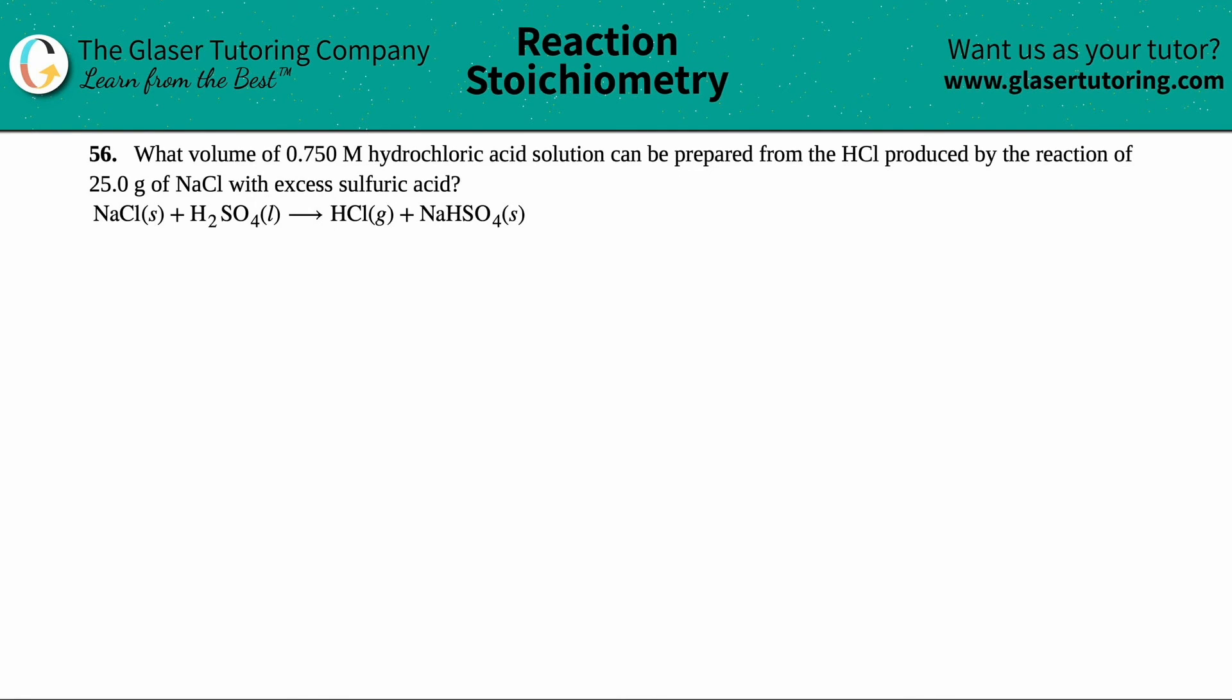Number 56, what volume of 0.750 molarity hydrochloric acid solution can be prepared from the HCl produced by the reaction of 25.0 grams of sodium chloride, which is NaCl, with excess sulfuric acid?